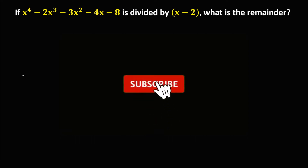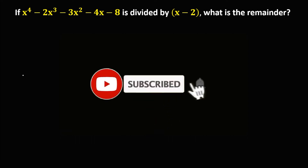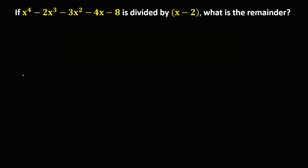Let's solve this problem. If x to the power 4 minus 2x to the power 3 minus 3x squared minus 4x minus 8 is divided by x minus 2, then what is the remainder?